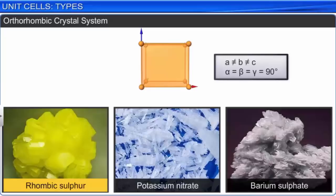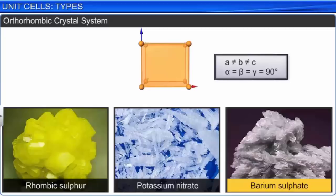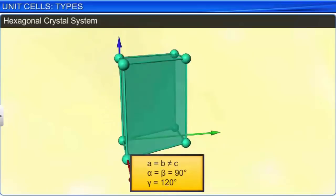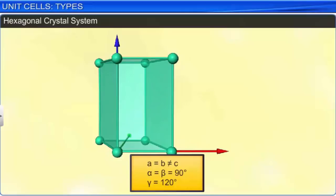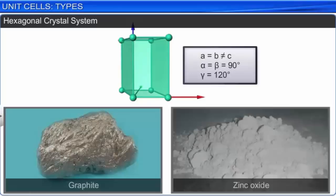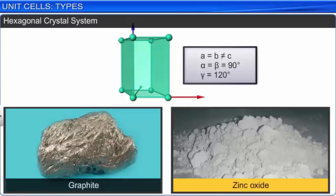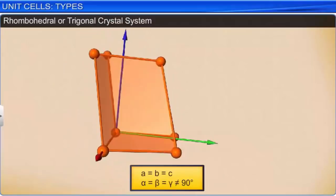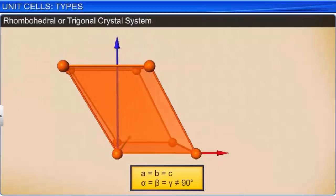In a hexagonal crystal system, two edges are of equal length, two angles are 90 degrees, and one angle is 120 degrees. The only possible lattice is primitive. Examples include graphite and zinc oxide. In a rhombohedral or trigonal crystal system, the three axes are of equal length and inclined at the same angle, but the angle is not equal to 90 degrees. The only possible lattice is primitive. Calcium carbonate and mercuric sulfide are examples.